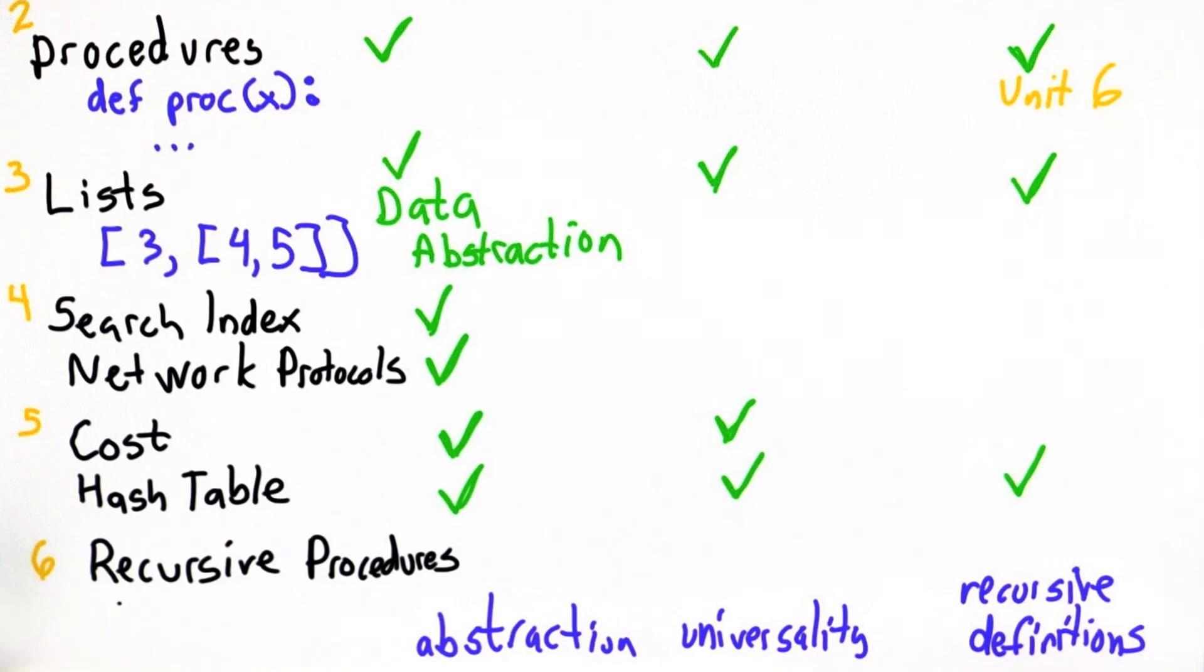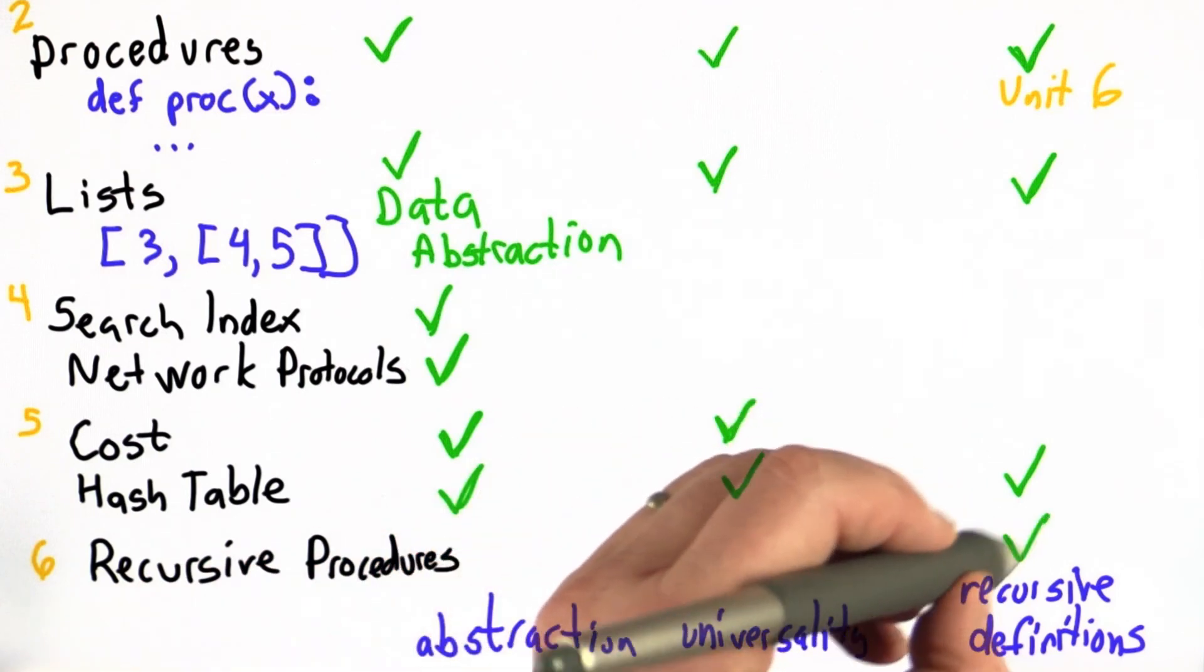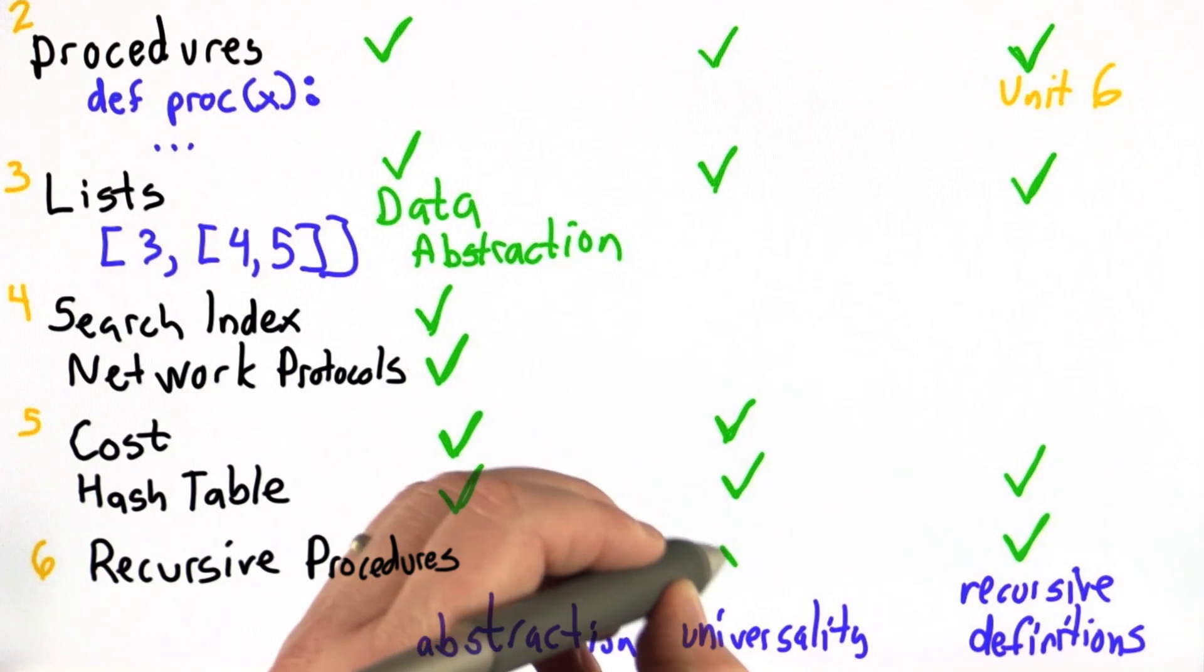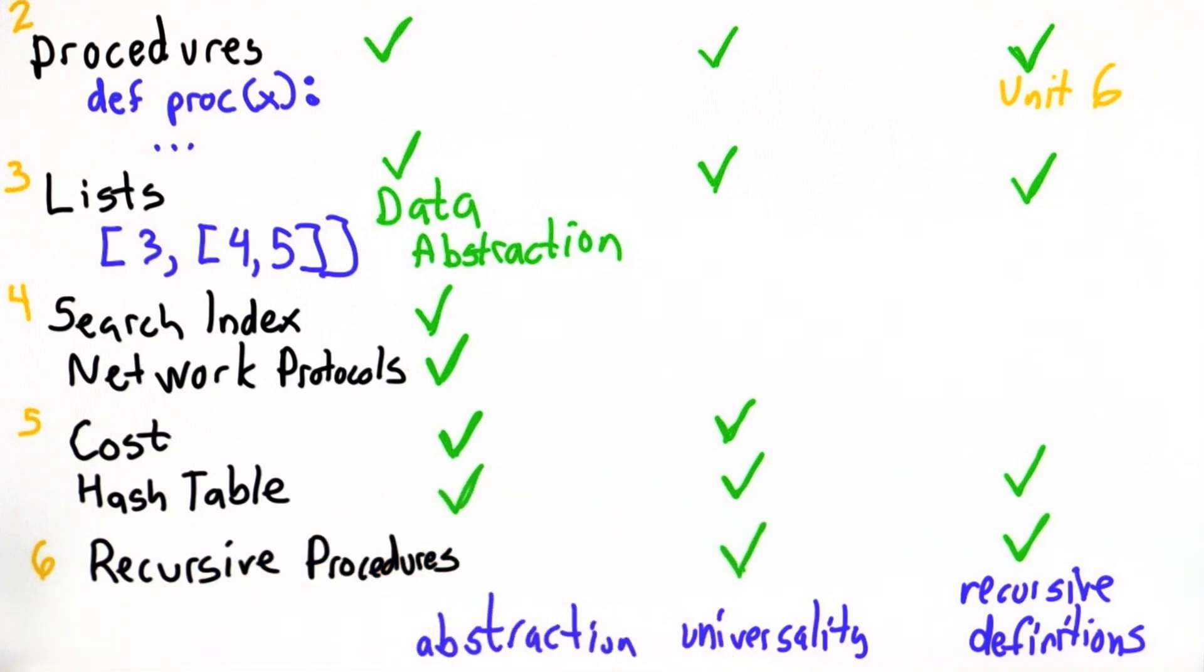And finally, in Unit 6, the main big idea was recursive procedures. Obviously, that fits into our theme of recursive definitions. It also relates to universality. We showed how to make code that runs forever or keeps on going as long as it needs to without using a while loop. So that gives some support for the idea that all we really need are procedures if and a way to keep track of things to be able to define every computer program.